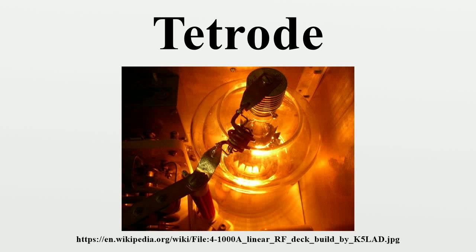A tetrode is a vacuum tube having four active electrodes. There are several varieties of tetrode, with the screen grid tube and the beam tetrode being the most common. The four electrodes in order from the center are a thermionic cathode, first and second grids, and a plate.